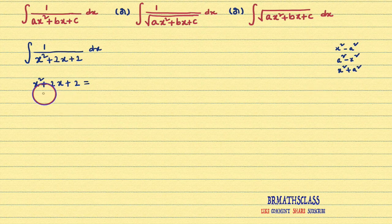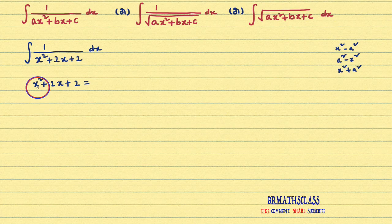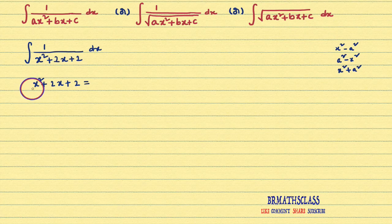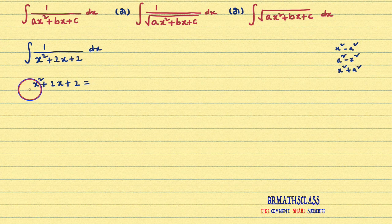Here, you make sure that x square coefficient is 1 or not. If x square coefficient is 1, nothing to worry. If x square coefficient is not 1, we take that number common and make x square coefficient 1. Here, x square coefficient is 1.